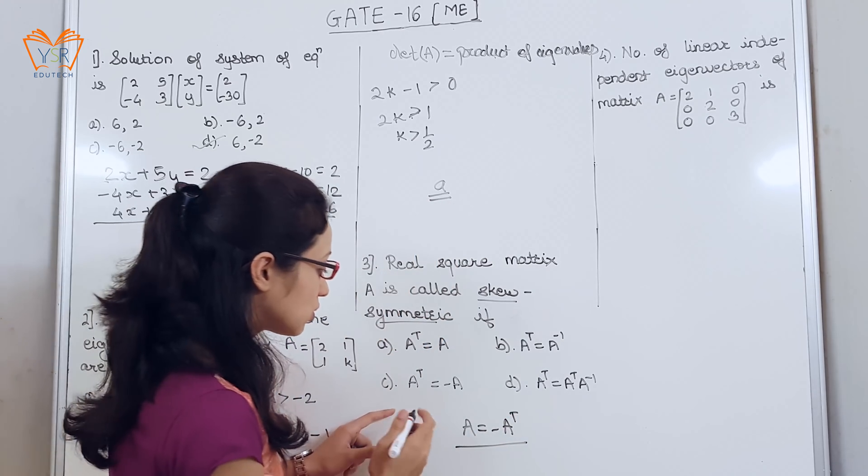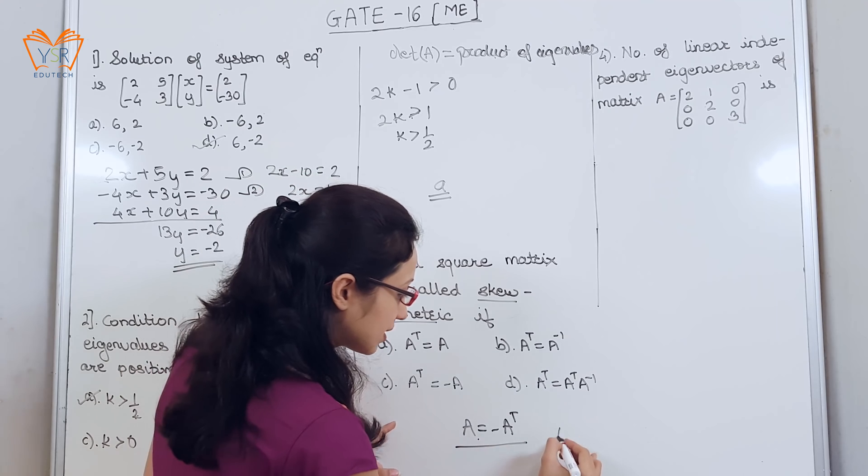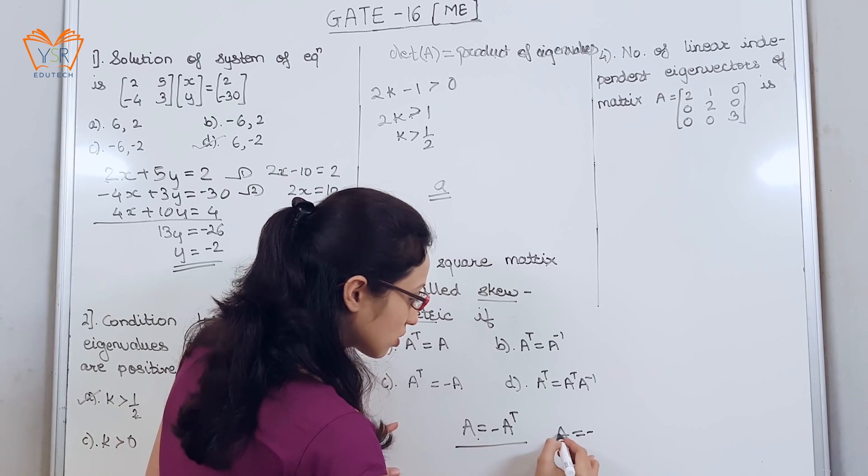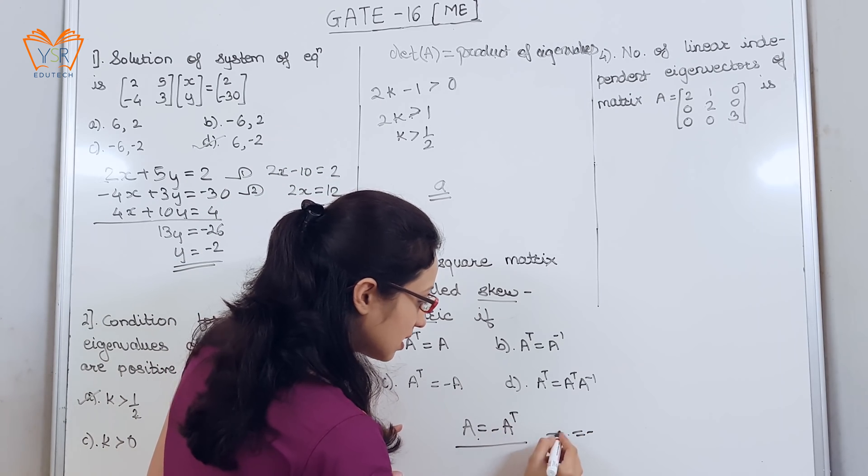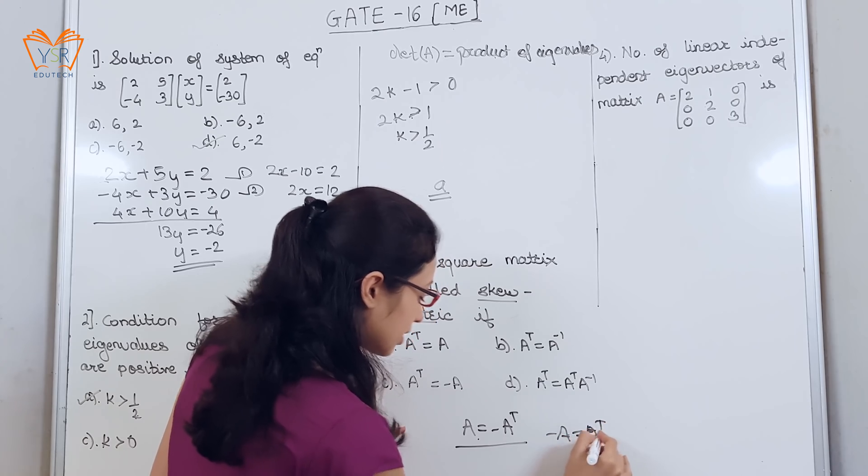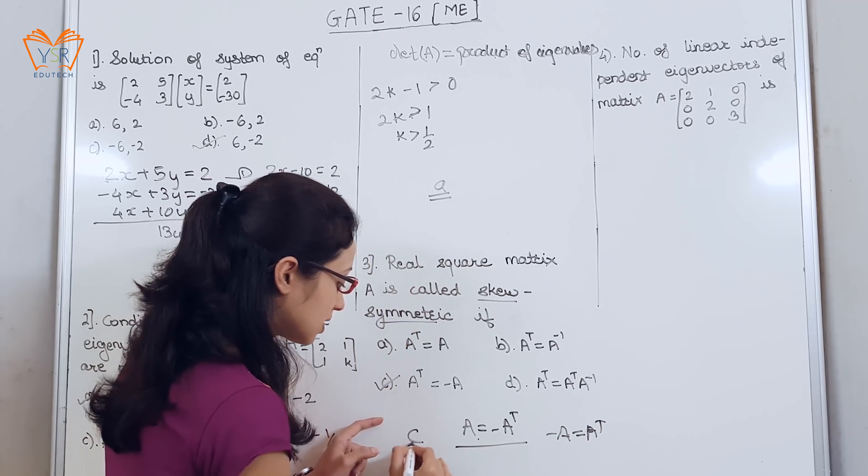Now, if you see all the options, we can write this as minus A is equal to A transpose. That is, option C is correct.